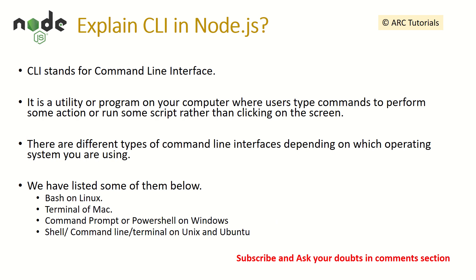Explain CLI in NodeJS. CLI stands for command line interface. It is a utility or program on your computer where users type commands to perform some actions or run some script, rather than clicking on the screen. This is also known as console mode. There are different types of command line interfaces depending on which operating system you are using — for example, Bash on Linux, Terminal on Mac, and Command Prompt or PowerShell on Windows.